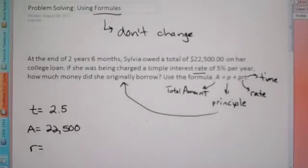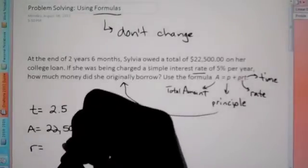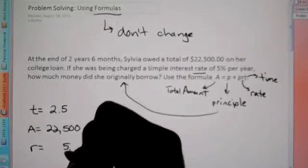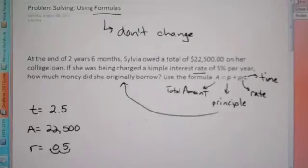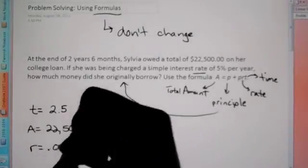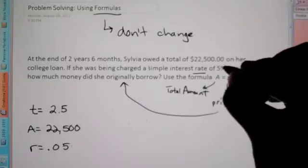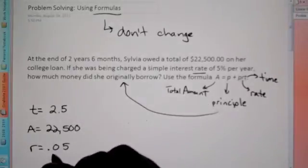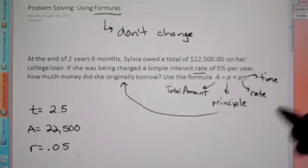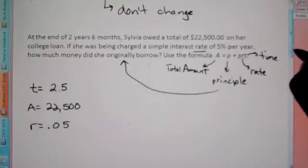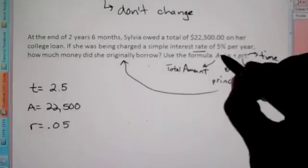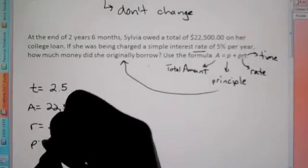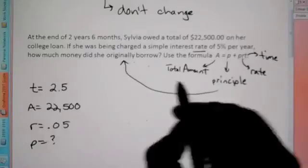Here's the thing about percent: when you're putting percent into a word problem, you don't want to use 5%. What you're going to do is take that 5 and move the decimal over twice. So it's actually going to be .05. When you do percentage, because percentage is a number over 100, we move the decimal over twice. So rate is .05. Obviously they won't give us a problem where we know all the information, so we know A, we know R, we know T — we must not know P. How much did she originally borrow? That's your principal.